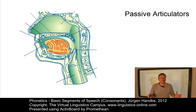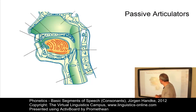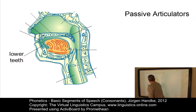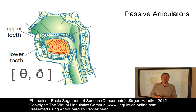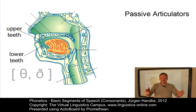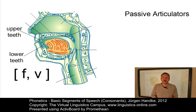A passive articulator is a position in the vocal tract which is involved in the production of speech sounds but does not move. Starting at the front of the vocal tract, the following passive articulators can be classified. For example, the lower and upper teeth. The upper teeth are locations where the tongue makes contact to produce several different consonants.